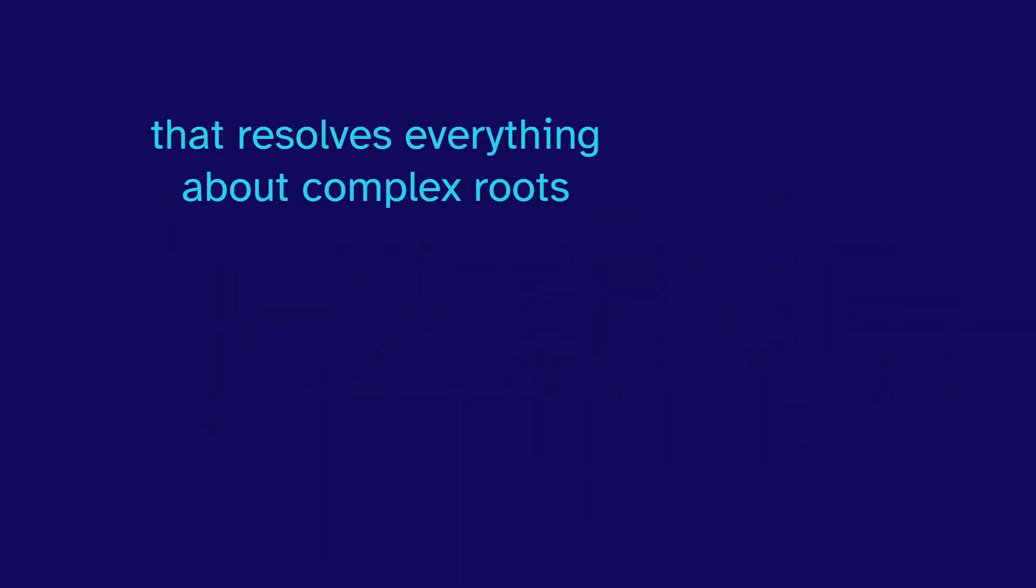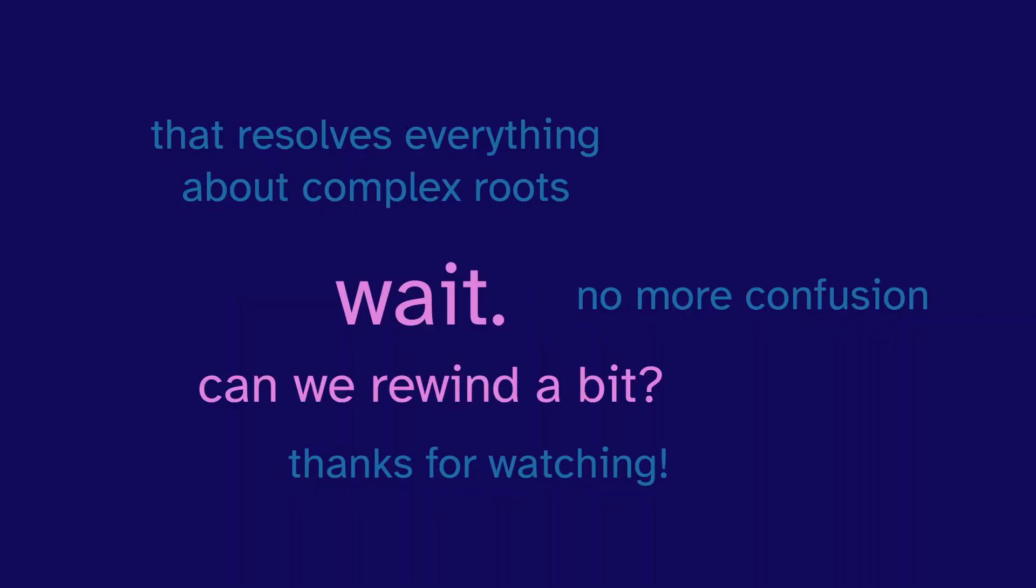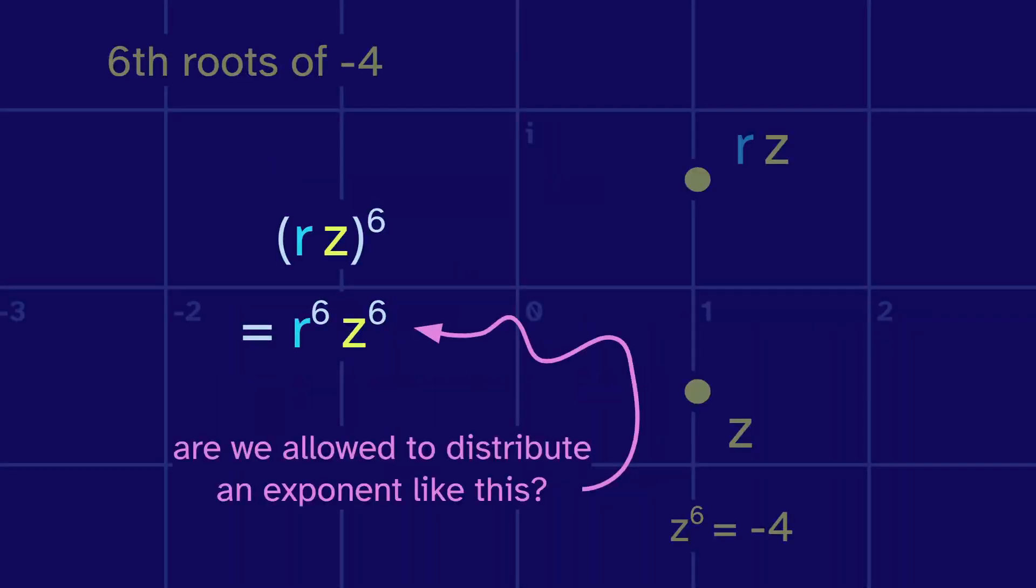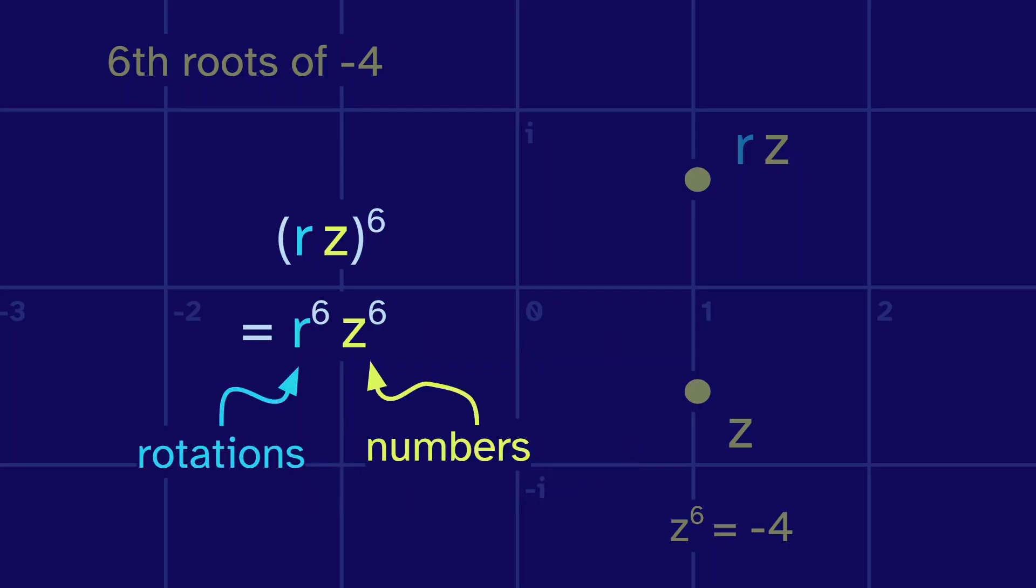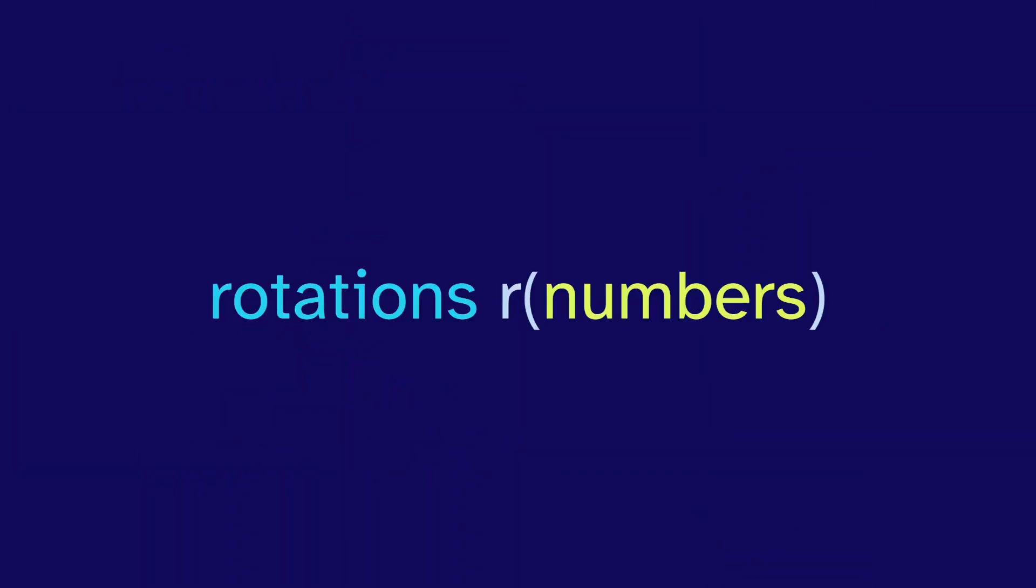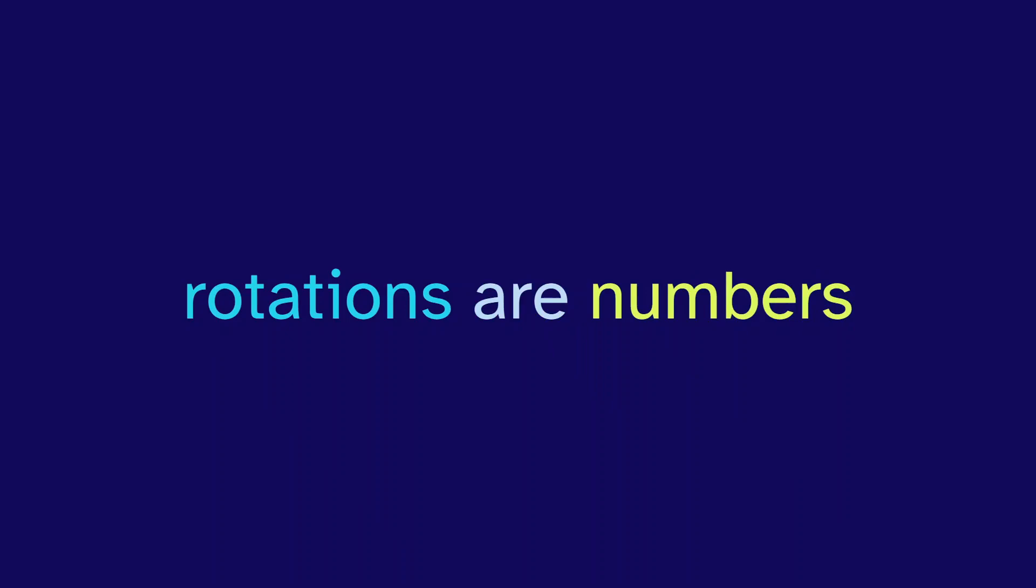Okay, that resolves everything about complex roots. No more confusion. Thanks for watching. Wait, can we rewind a bit? Are we allowed to distribute an exponent like this? This is a weird mix of rotations and numbers. Yeah, we can, because rotations are numbers. No, rotations are numbers.